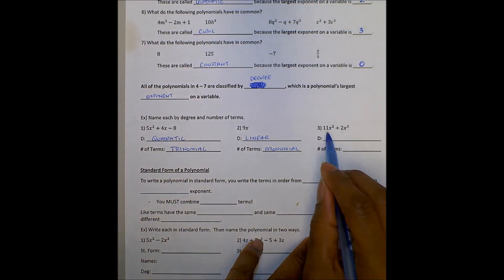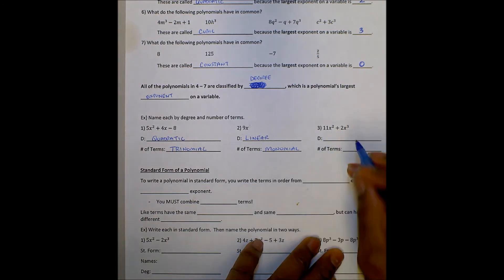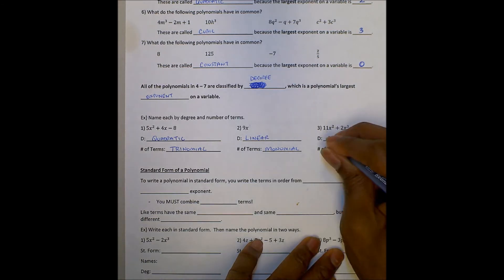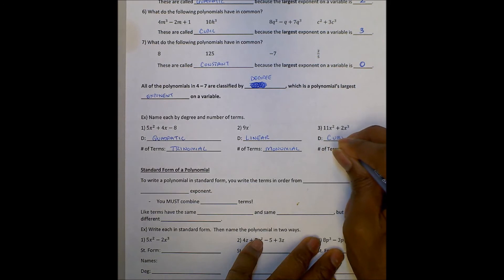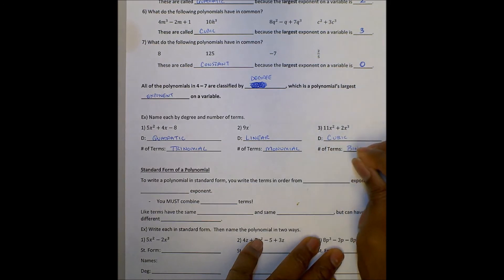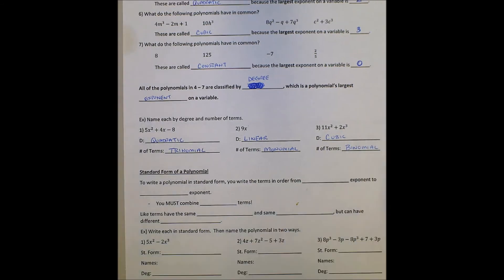And then finally, we have 11x squared plus 2x cubed. The degree, there's 3, so we call it a cubic. Since there's 2 terms, we call it a binomial. Cubic binomial.